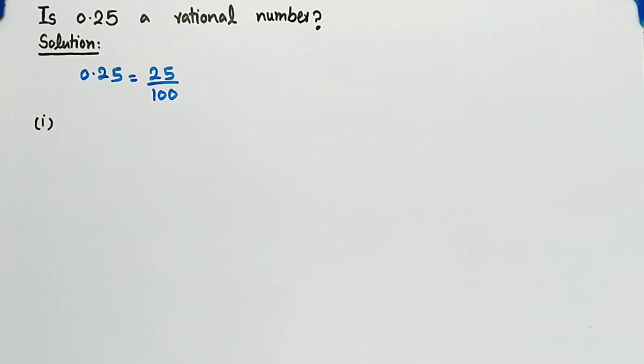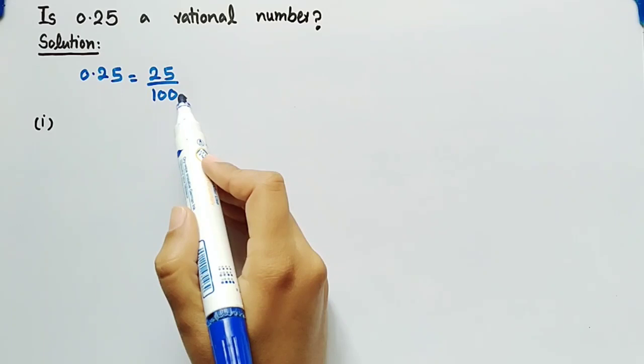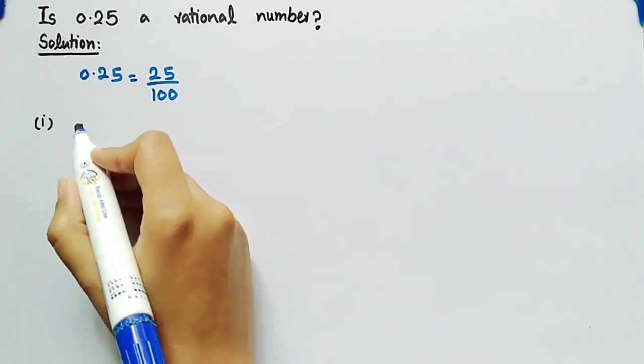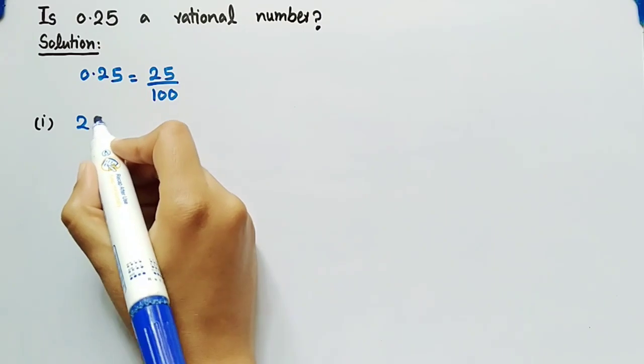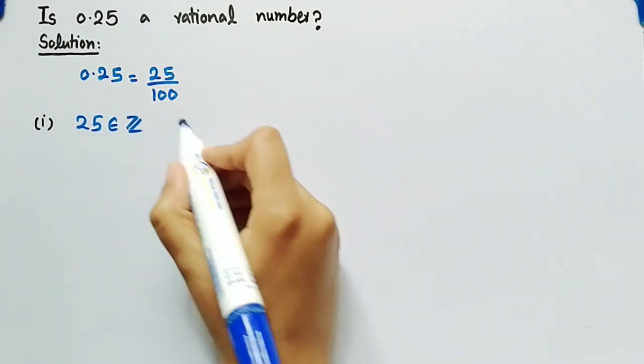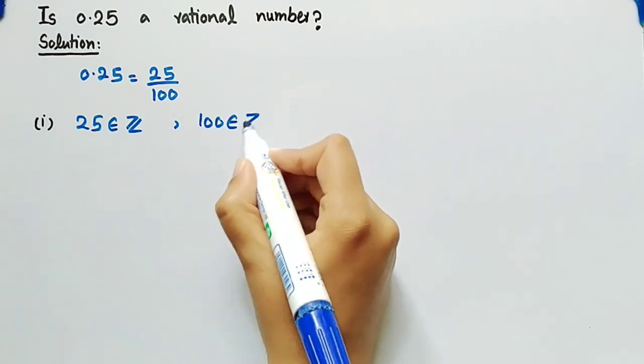The first condition is that both the numerator and the denominator should be from the set of integers. We can clearly see that the numerator, 25, belongs to the set of integers. And the denominator, 100, also belongs to the set of integers.